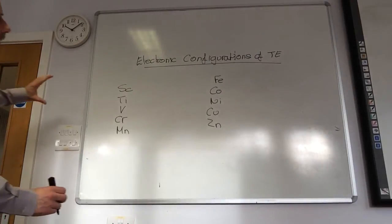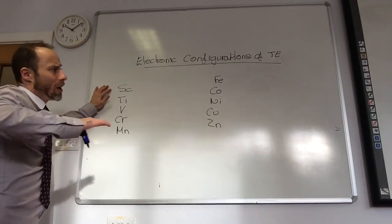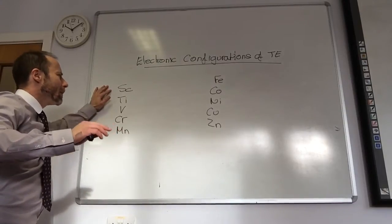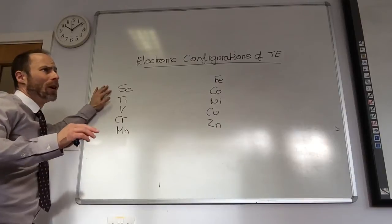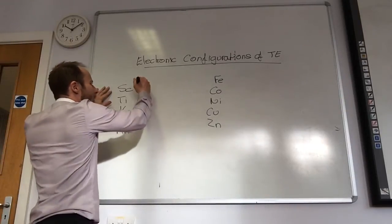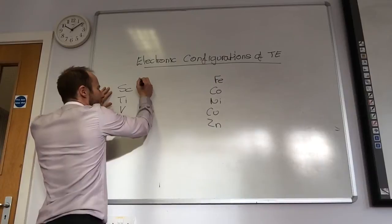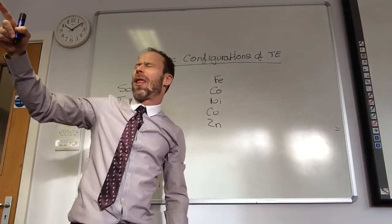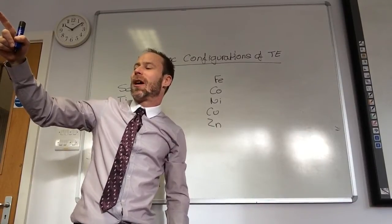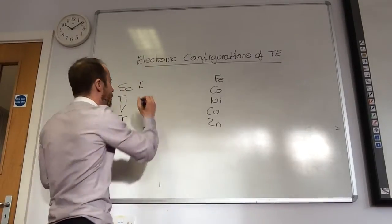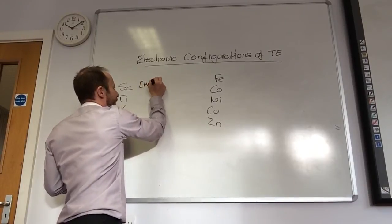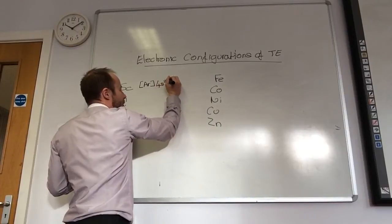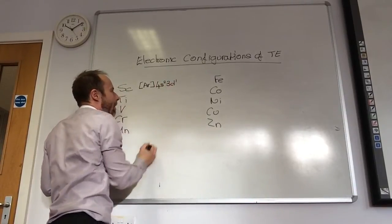So we'll whiz through the electronic configurations of the first set of transition elements — those that fill in the 3D. From AS, rather than writing 1S2, 2S2, we can just use square brackets with the nearest noble gas, which is going to be argon. So scandium is going to be square brackets argon — remember we form the 4S first — 4S2, 3D1. Oh, that's really clever.